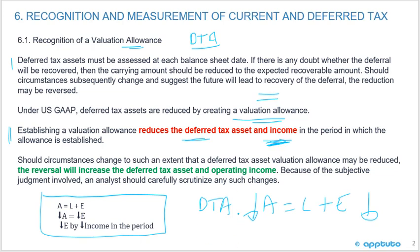If you're reversing the valuation allowance, that means the asset is going up, so equity has to go up and it's going to increase your operating income. Establishing a valuation allowance reduces the deferred tax asset — assets go down, equity goes down, and it's through income. If you reverse the allowance, it's going to increase the deferred tax asset and the operating income.